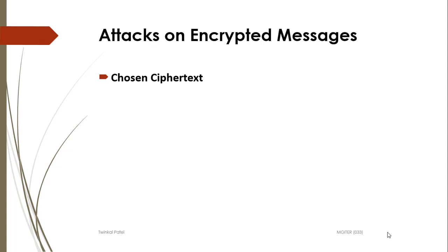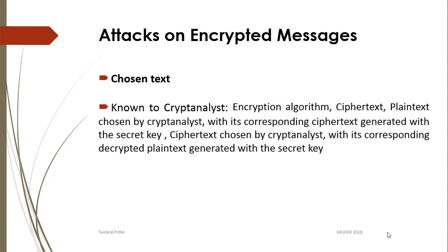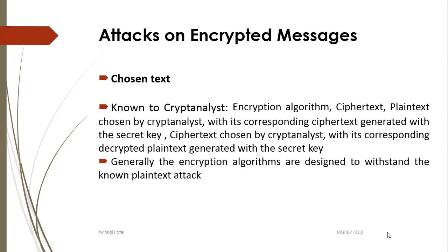In a chosen ciphertext attack, the attacker knows the encryption algorithm, the ciphertext chosen by the cryptanalyst, and its corresponding decrypted plaintext generated with the secret key. The attacker can choose the ciphertext and analyze the plaintext generated with that secret key. In a chosen text attack, the cryptanalyst knows the encryption algorithm and ciphertext, and can select plaintext, encrypt it, observe the ciphertext, and then reverse the entire process. This model has a good probability of success. Generally, encryption algorithms are designed to withstand at least the known plaintext attack.